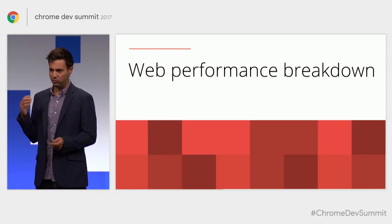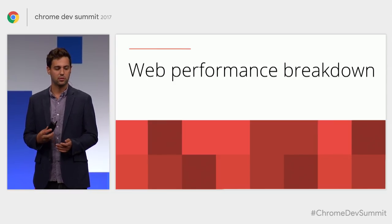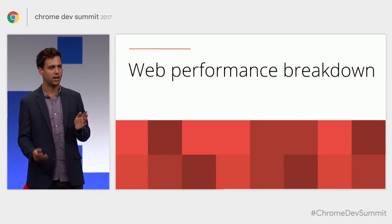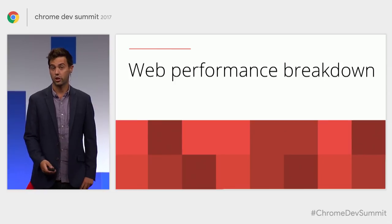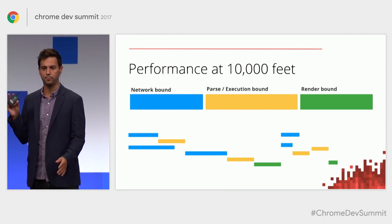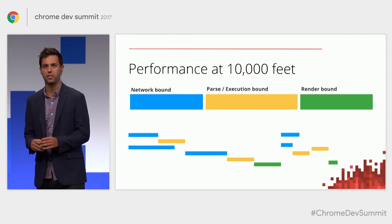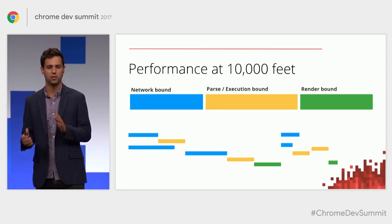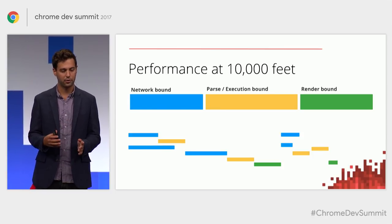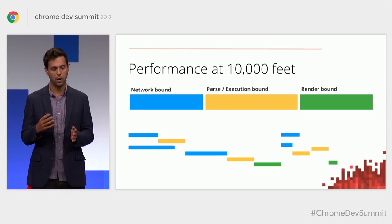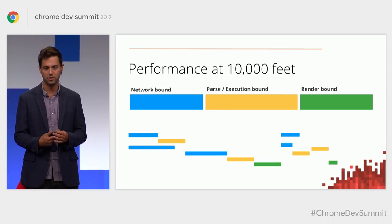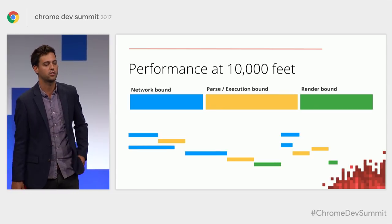Before we go into talking about performance, I want to make sure we have a common language. Let's zoom out and think about performance in three primary pillars: network-bound operations, parse and execution-bound operations, and render-bound operations.